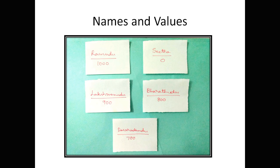The values may be changed, but for Ramudu the value is 1000 and for Sita the value is 0 — those two are constants. For other characters you can adjust the values. This game will be played with a minimum of 3 persons. If there are only 2 persons, the game will not be played properly.